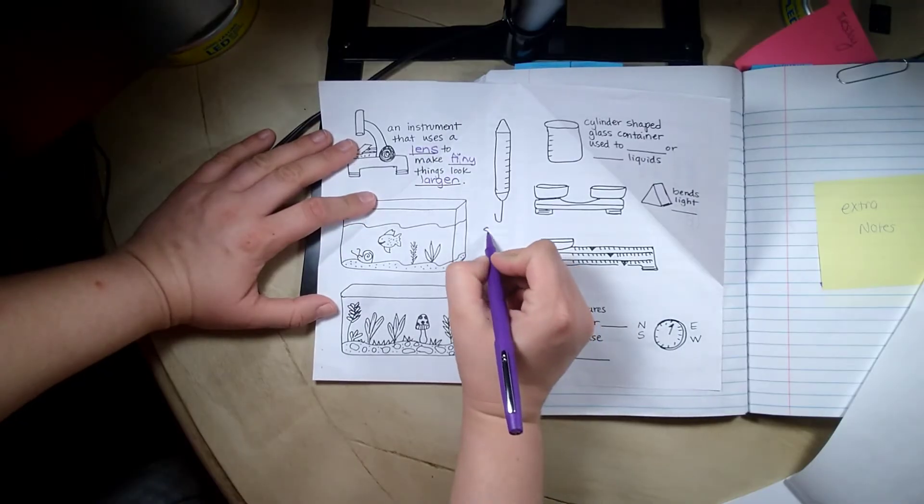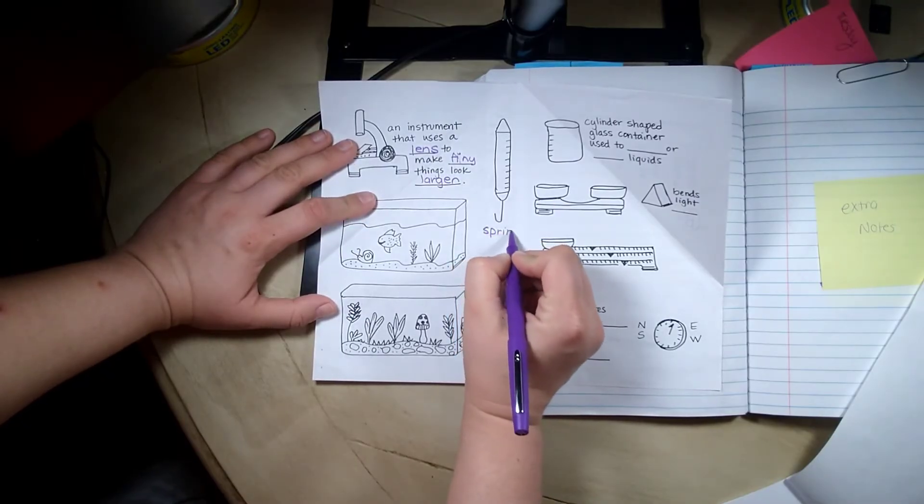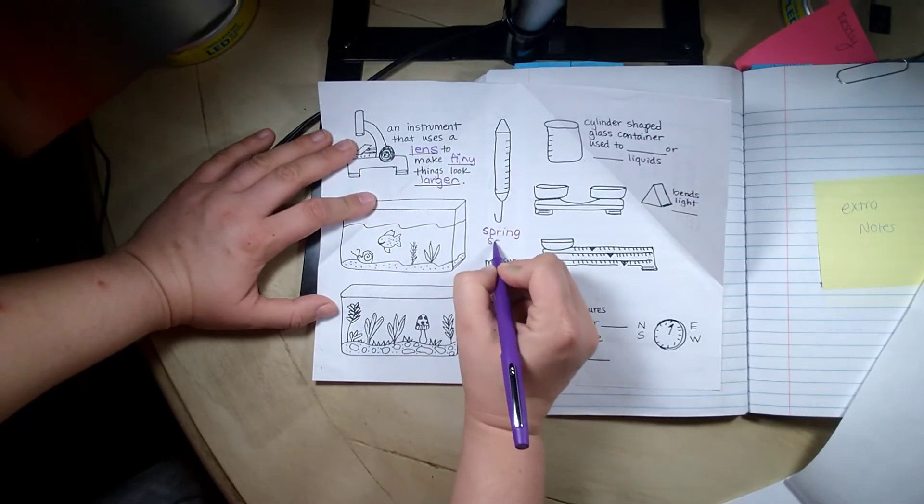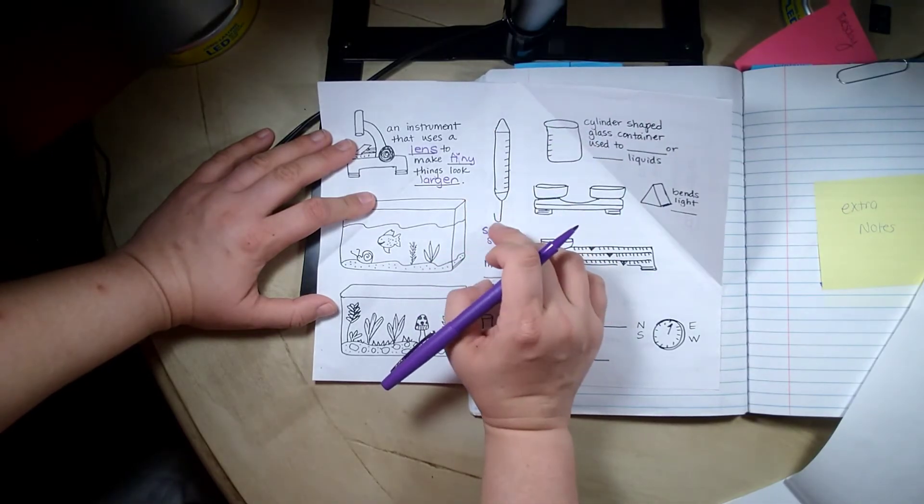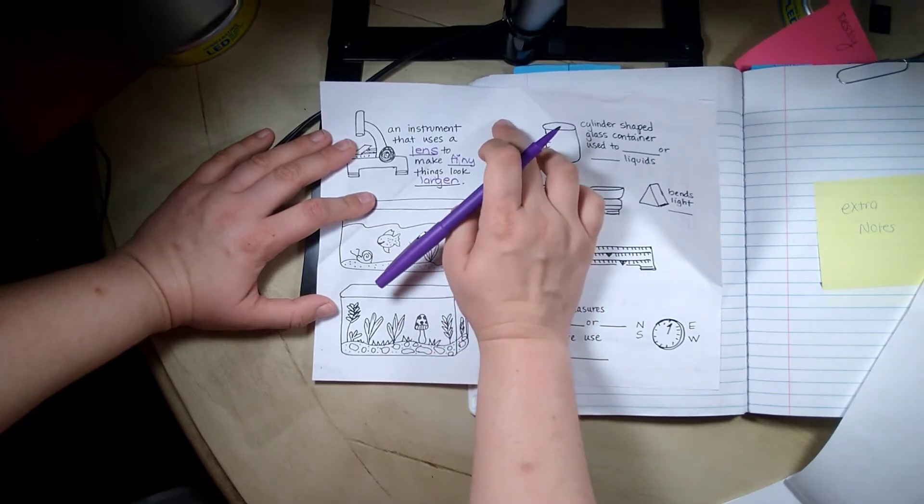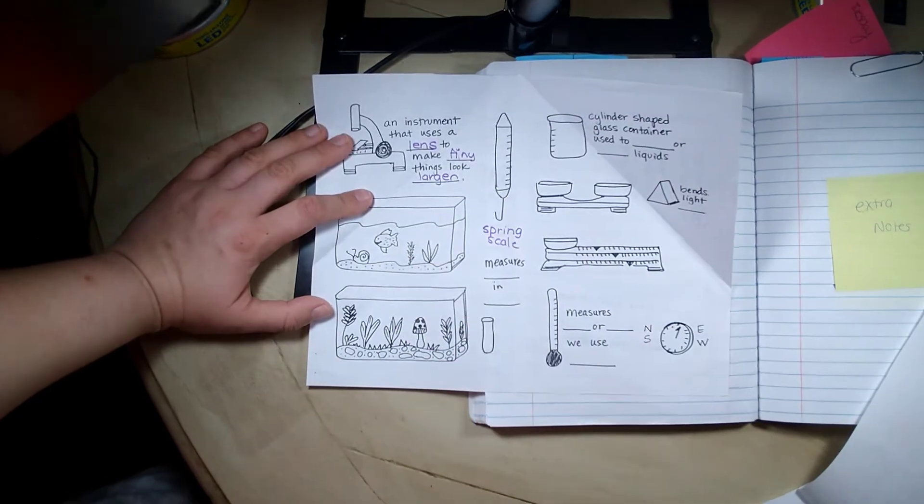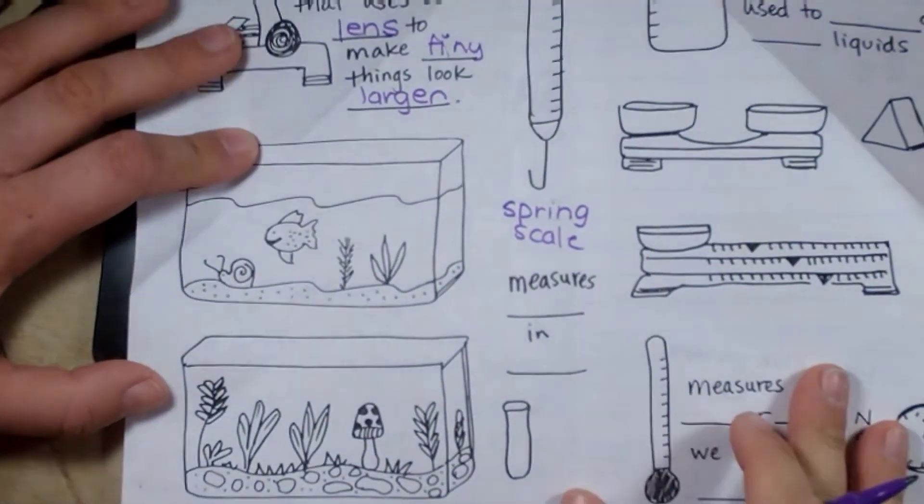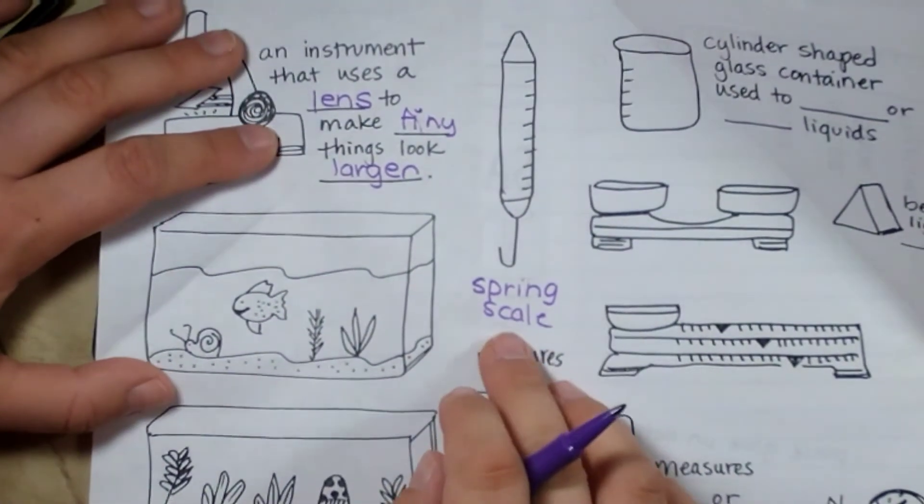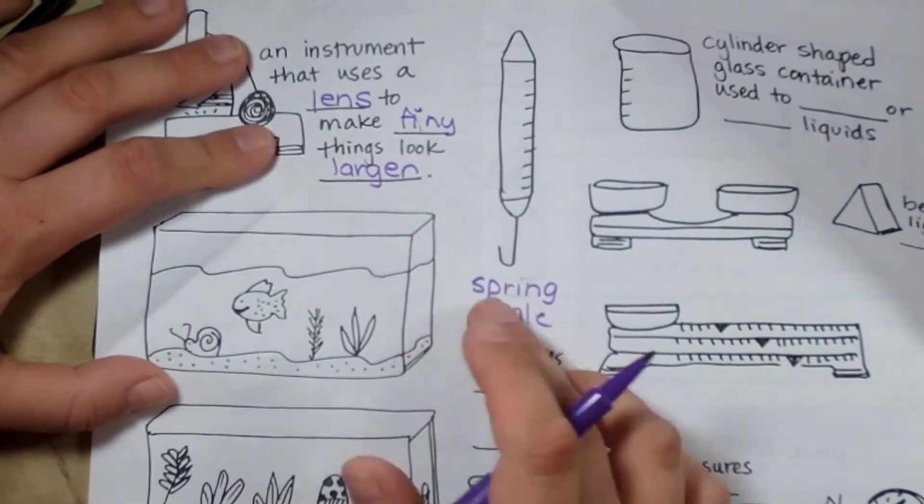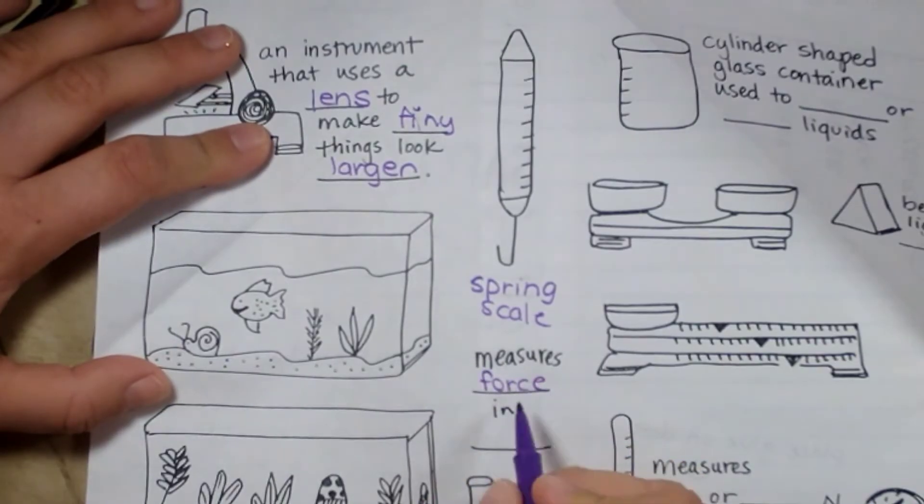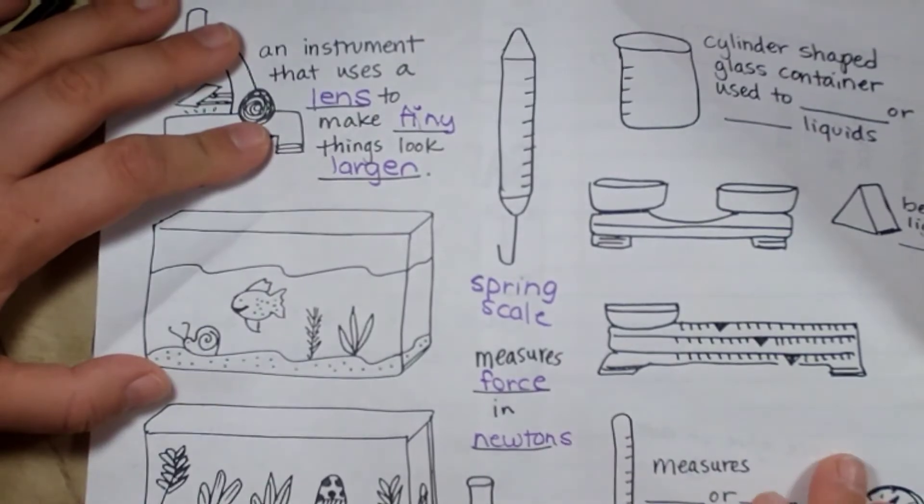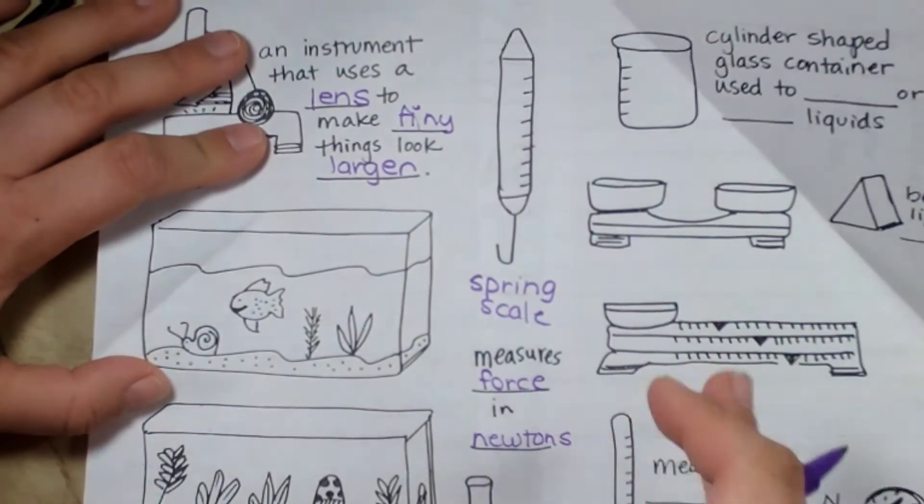This is a spring scale. I do not have one of those, but it's basically a tube like this that you hold at this part, and you hook something on the bottom, and it measures how much force it's pulling down, and you measure it in newtons. Newtons is, you have one newton, that's your force.